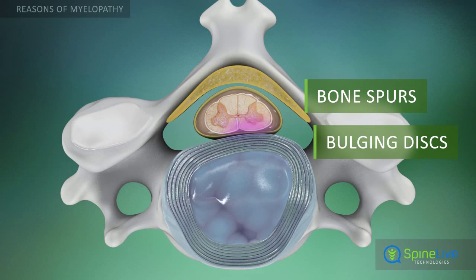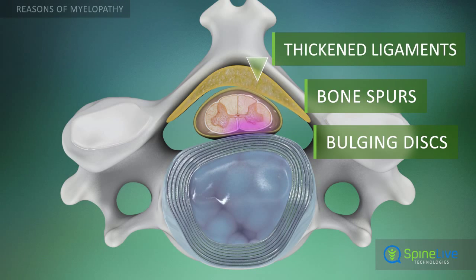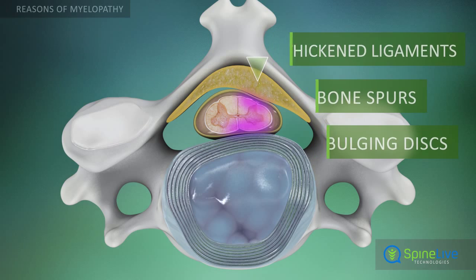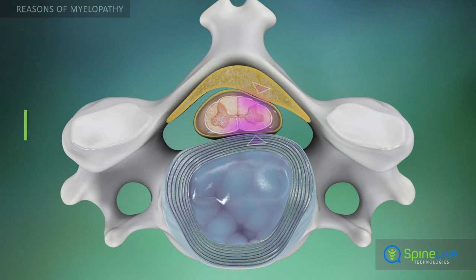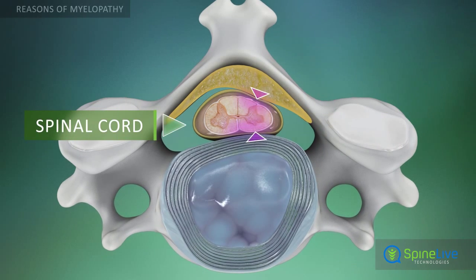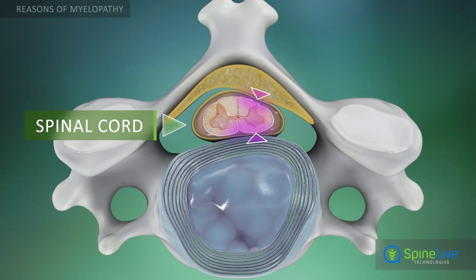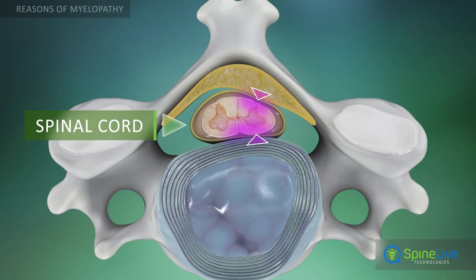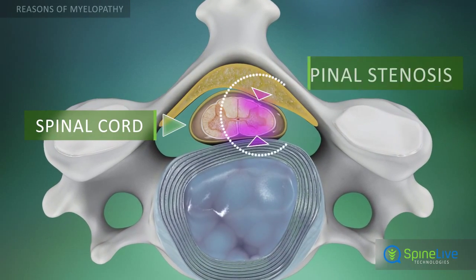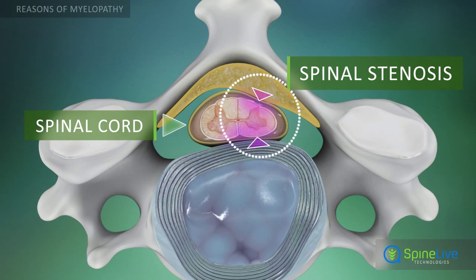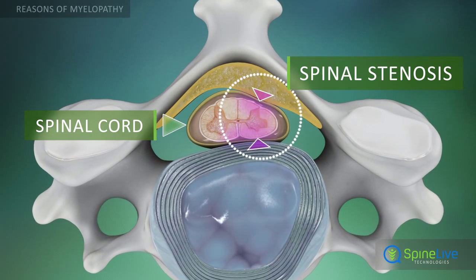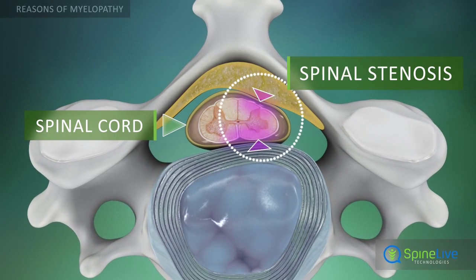or thickened ligaments may take up room in the spinal canal and compress the spinal cord. This condition is called spinal stenosis, and it is a common cause of myelopathy.